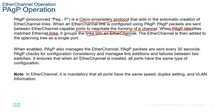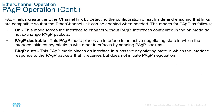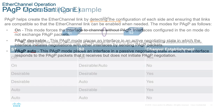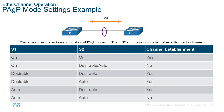There are modes in PAGP operation: ON, DESIRABLE, and AUTO. For an EtherChannel to establish, both sides should be ON, or both sides should be DESIRABLE, or one side DESIRABLE and the other AUTO, or AUTO and DESIRABLE. Those are the considerations for an EtherChannel to establish using PAGP.